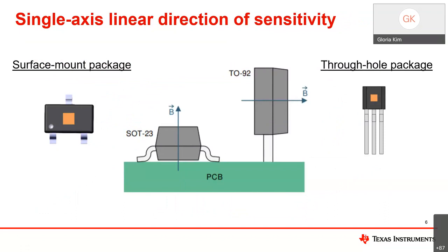Talking about the direction of sensitivity achievable with single-axis linears: these devices are typically offered in SOT-23 or TO-92 packages. A single-axis linear hall sensor has one hall element at the center of the device, sensitive to magnetic fields perpendicular to the face of the package. Once soldered onto the PCB, these packages offer different sensing directions. However, because of their one-dimensional nature, the sensing capabilities are really dependent on the overall mechanical design of the application.